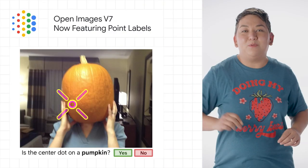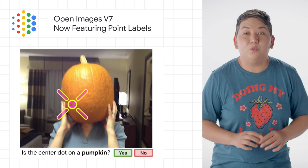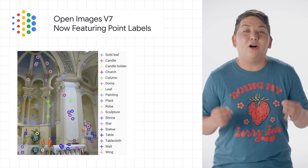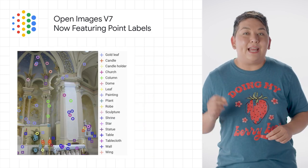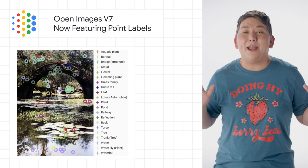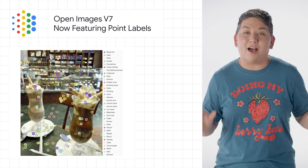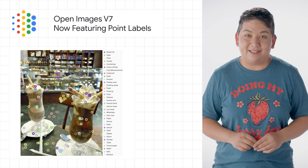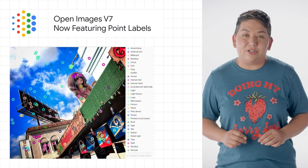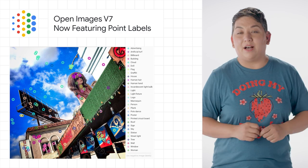This week, we announced the release of Open Images V7, which expands the Open Images dataset. Open Images is a computer vision dataset covering around 9 million images with labels spanning thousands of object categories. Researchers around the world use Open Images to train and evaluate computer vision models.